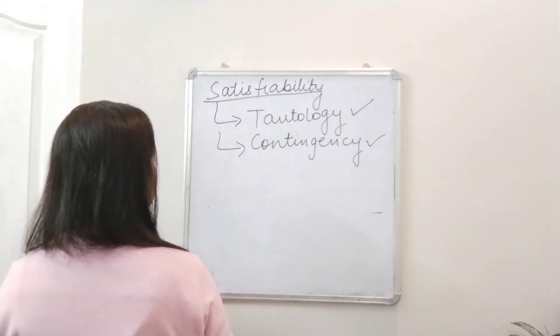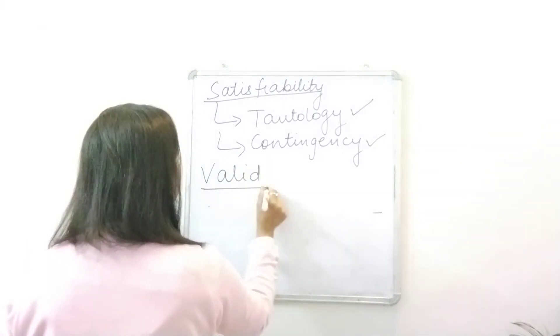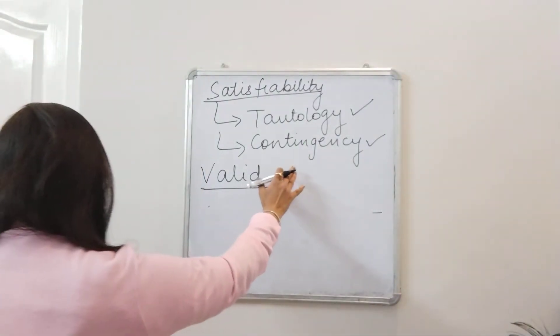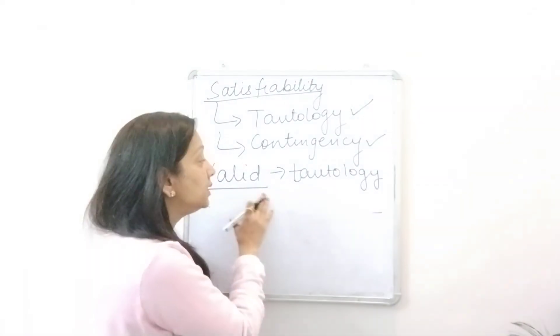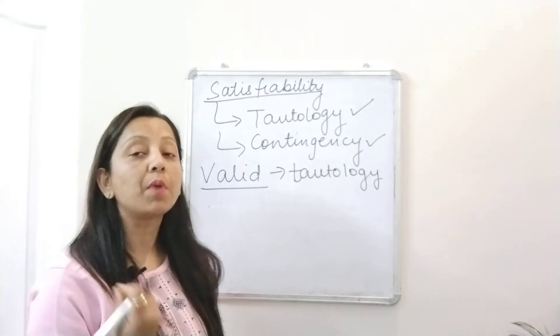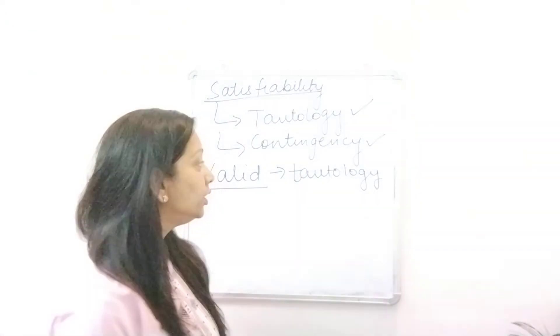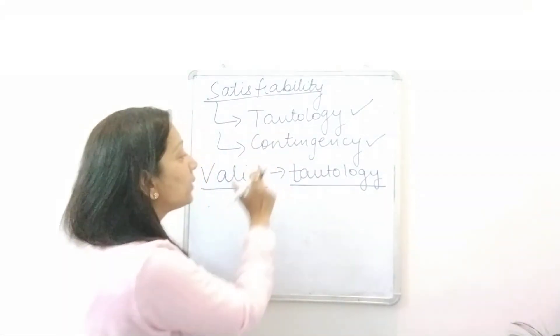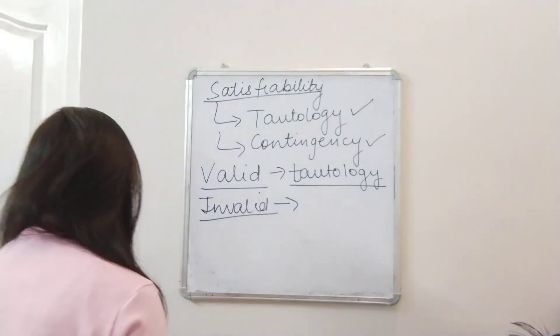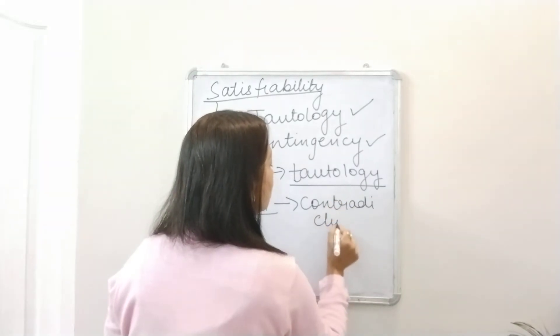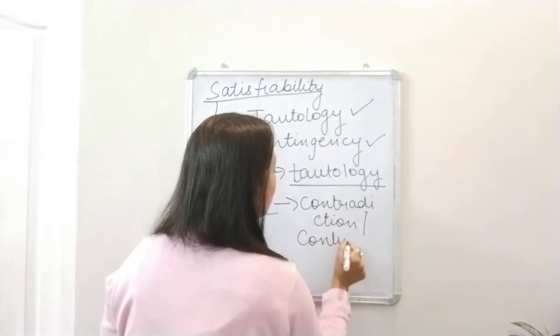Next comes validity and invalidity. A compound proposition is valid when it is a tautology. So a tautology is both satisfiable and valid. A compound proposition is invalid when it is either a contradiction or a contingency. So both contradiction and contingency are invalid.